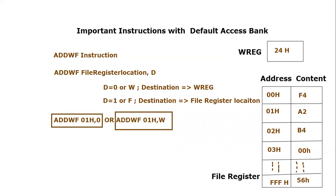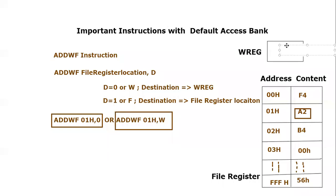If these instructions are executed, the content of 01 hex which is A2 will be added to 24 hex in the working register. So A2 plus 24: 2 plus 4 equals 6, and A plus 2 equals C — since A is 10 and adding 2 gives 12, which is C in hex. So the result stored in the working register will be C6 hex.